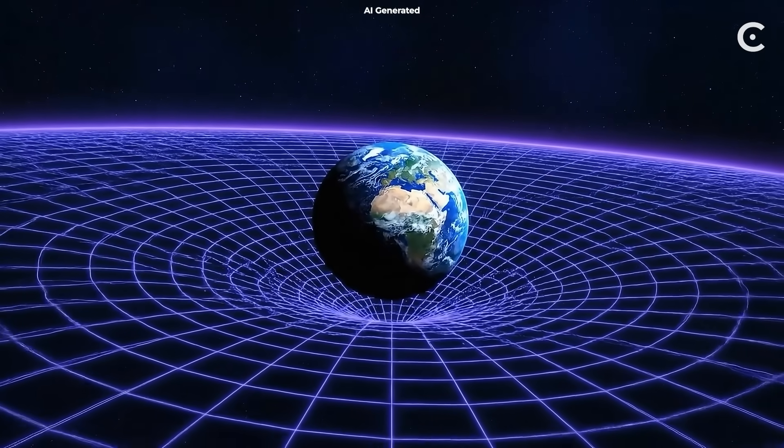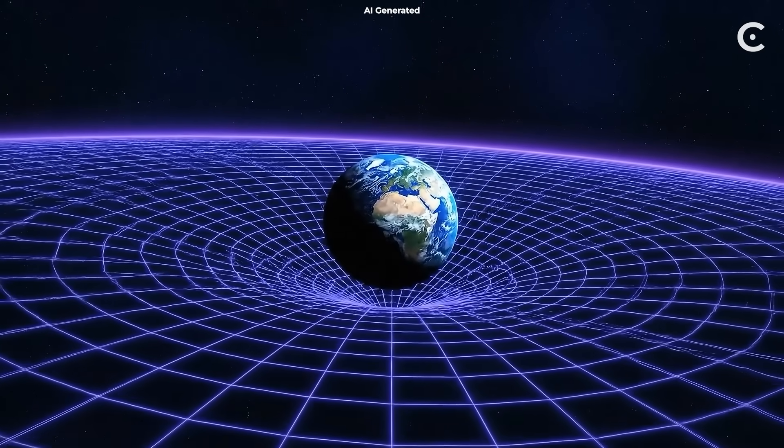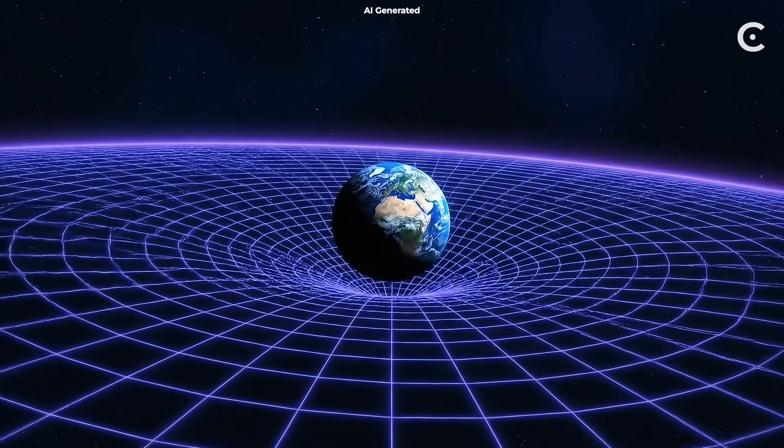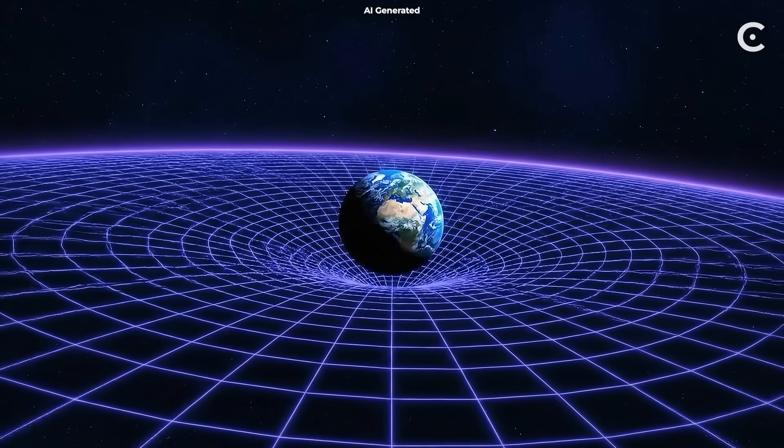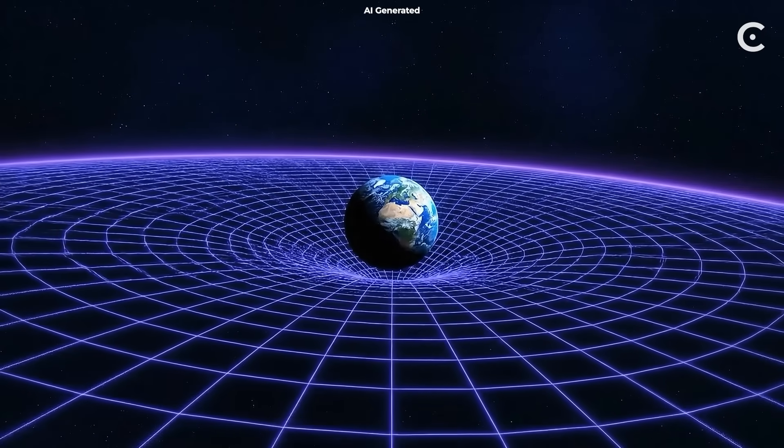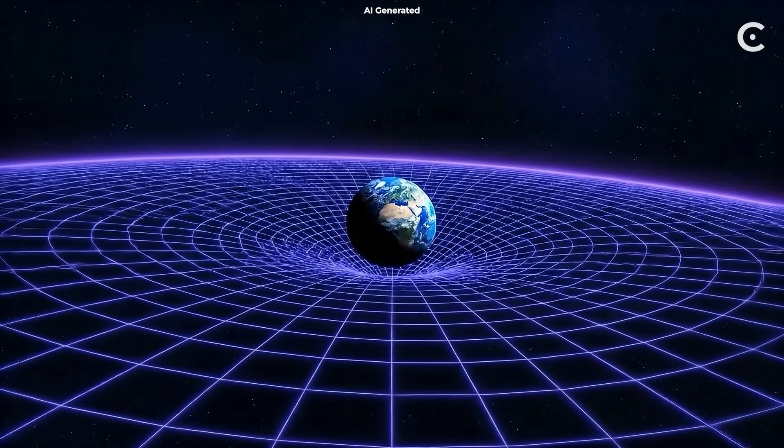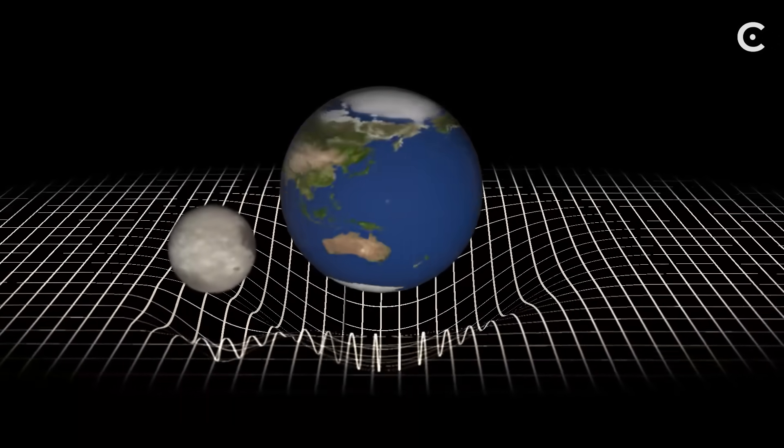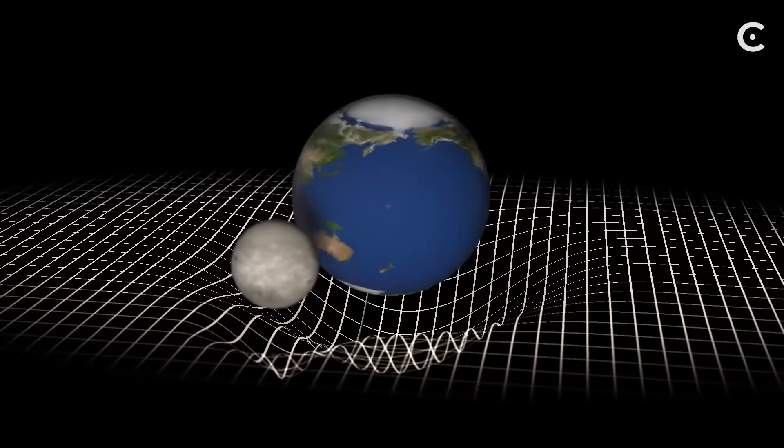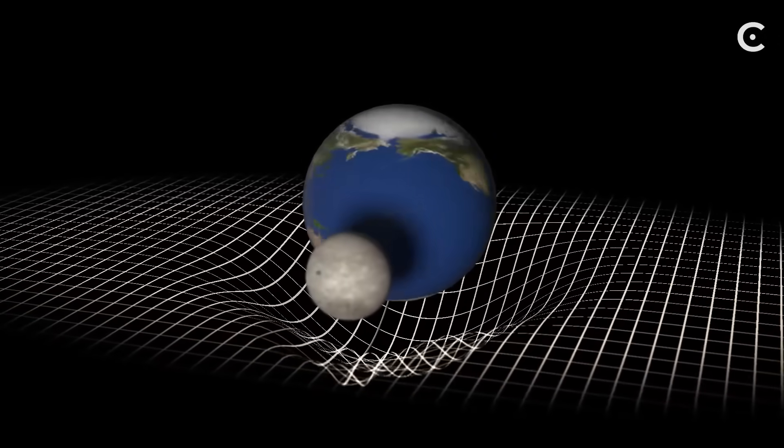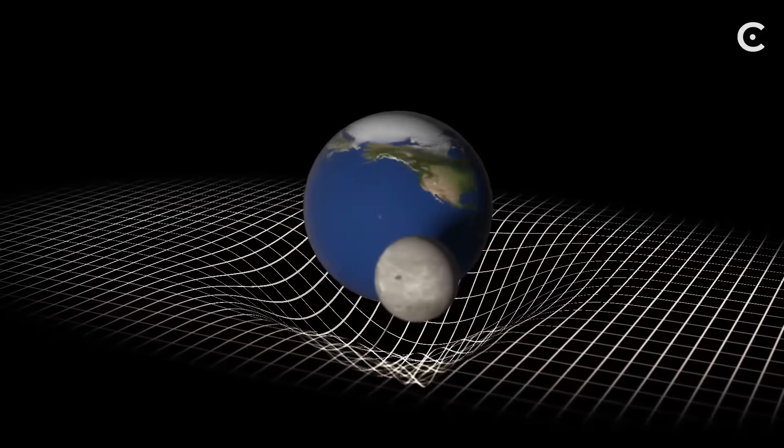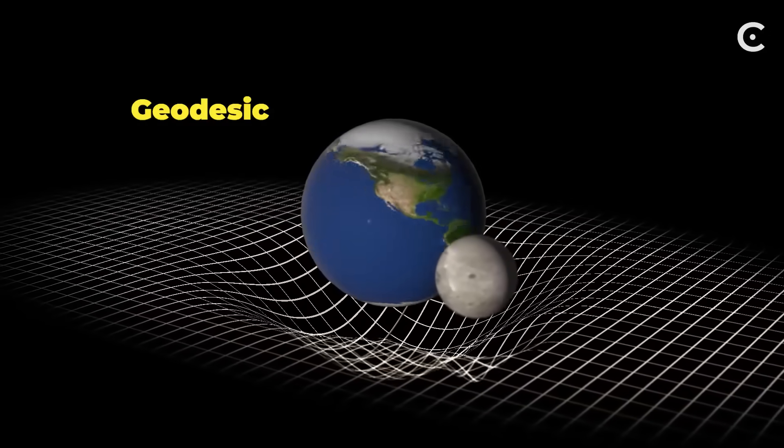Let's make this concrete. Earth has a mass of about six septillion kilograms. That enormous mass creates what we can think of as a dimple in space-time that extends in all directions. The Moon isn't being pulled toward Earth by some mysterious force. It's following the straightest possible path through this curved space-time, called a geodesic.